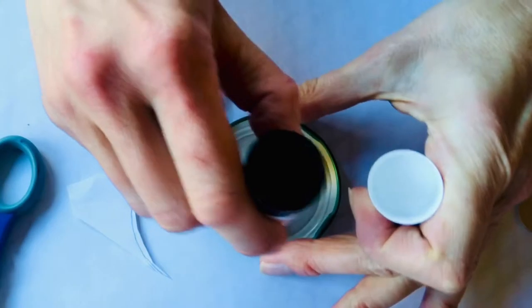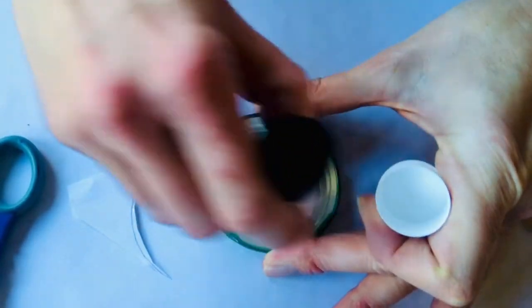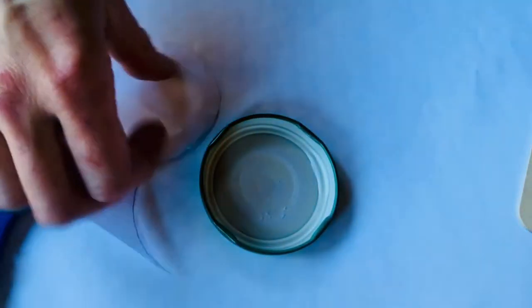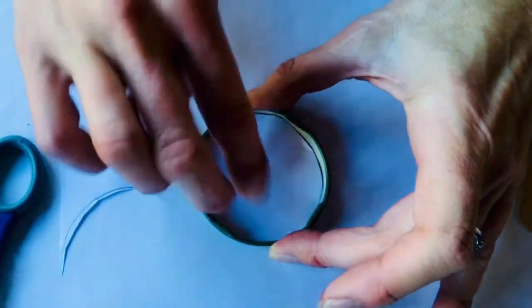Next, take your glue stick and put some glue in the center of the jam jar lid. You then can take your cut out circle and stick it inside. If you'd like to decorate this, you can with your coloring pens.